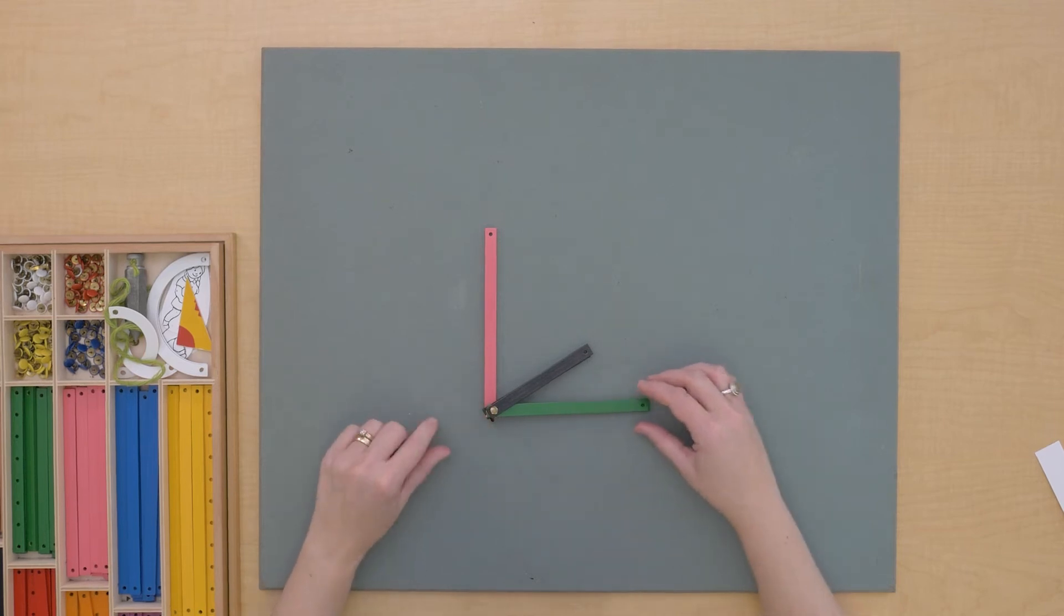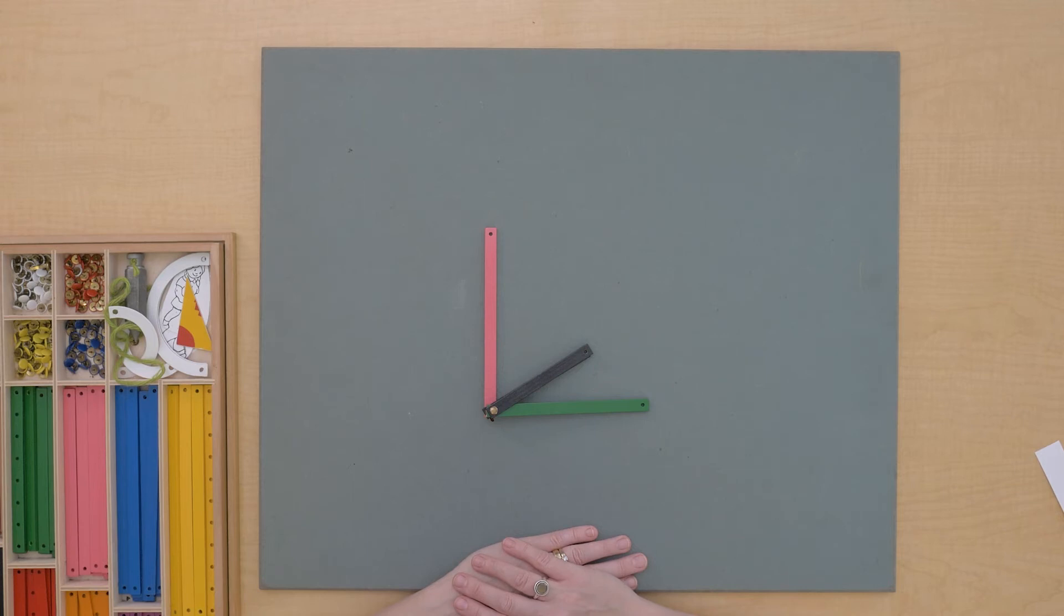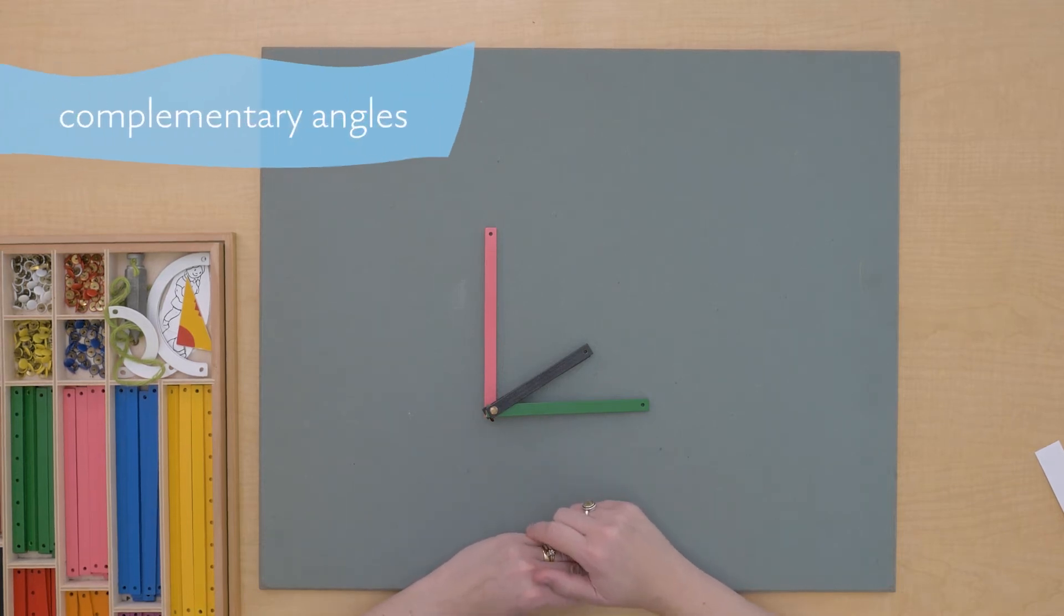When I have two angles like this that come together and create a right angle, we call these two angles complementary angles.